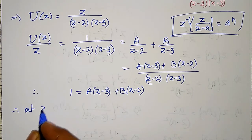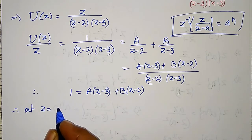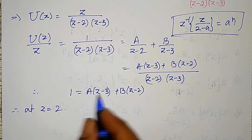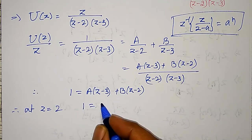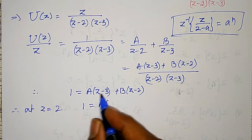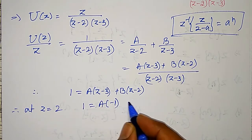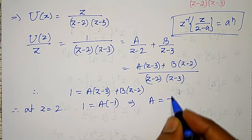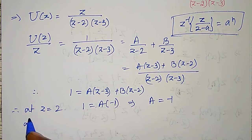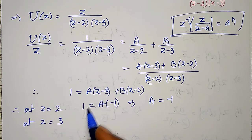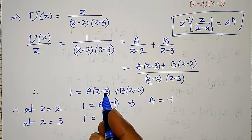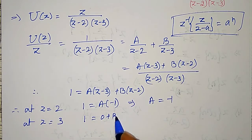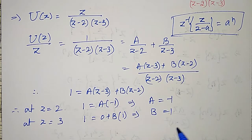At z equal to 2: 1 equals A into 2 minus 3, which is minus 1, so A equals minus 1. And at z equal to 3: 1 equals 0 plus B into 3 minus 2, which is 1, so B equals 1.